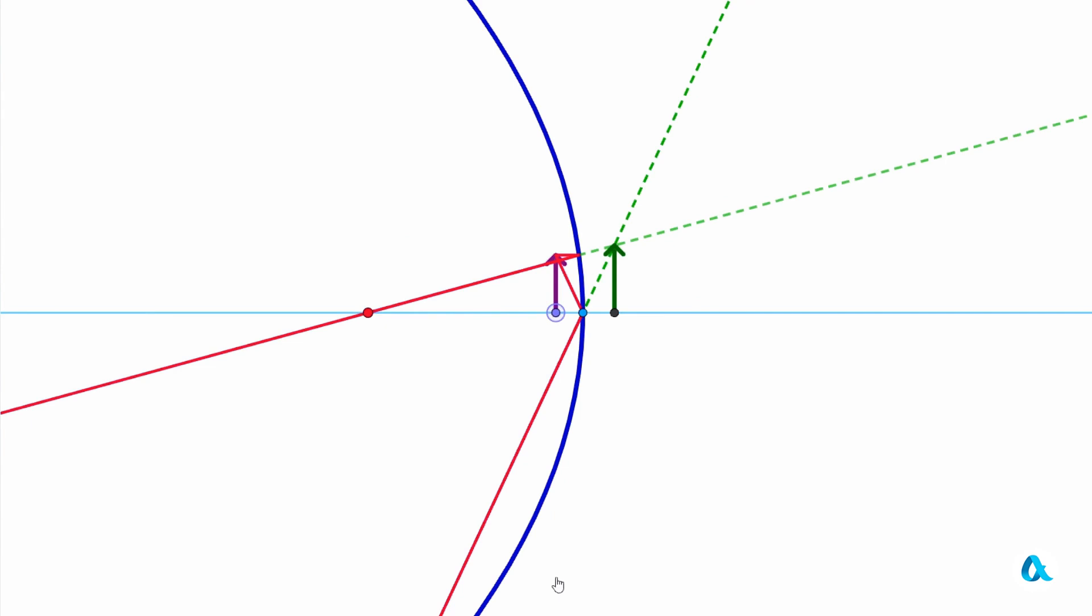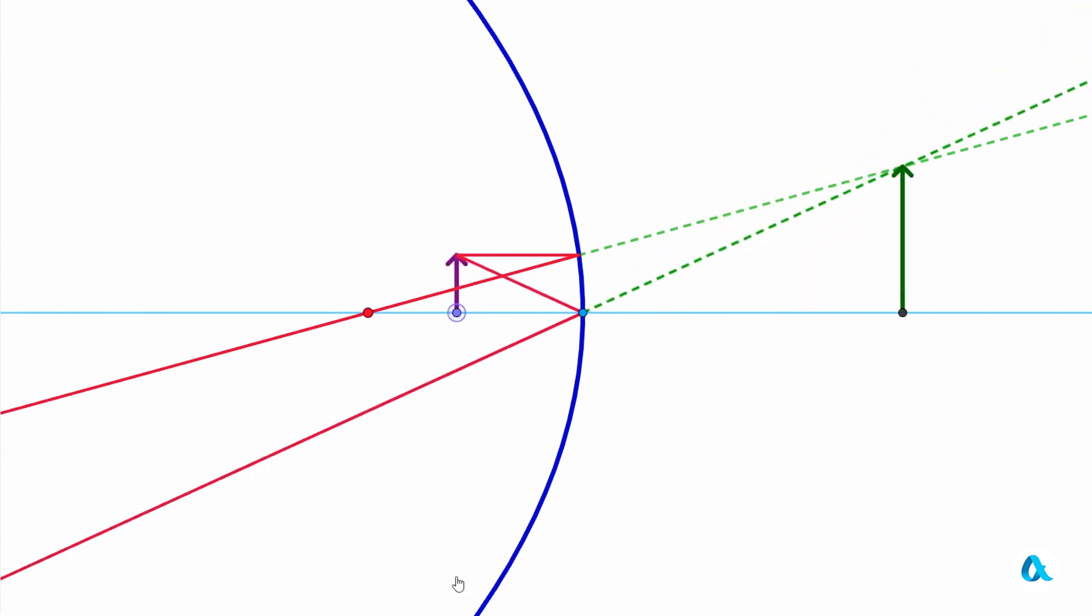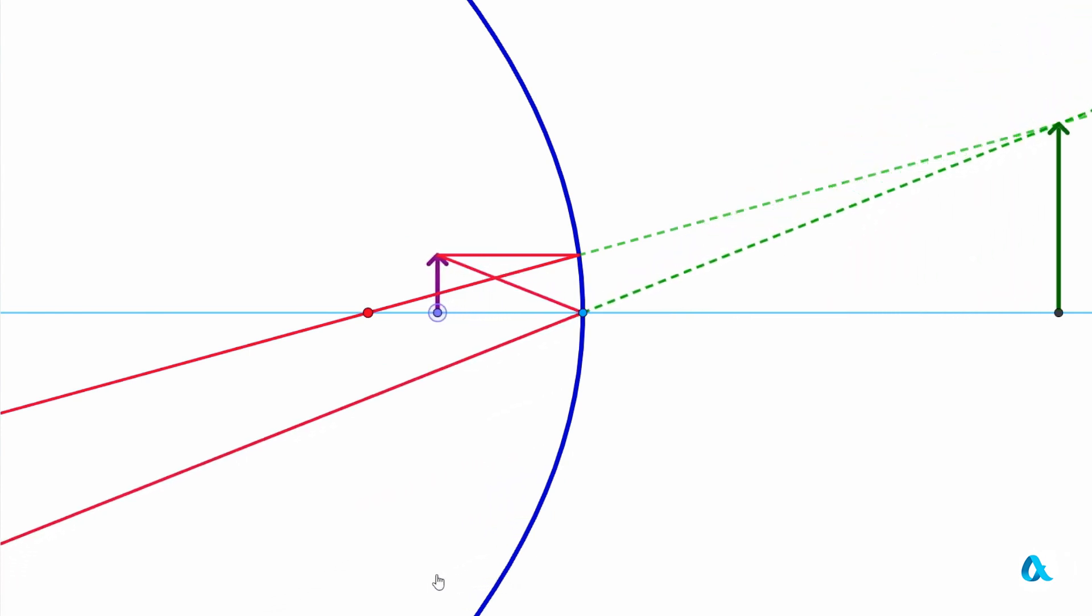Now, we will relocate the object within the GeoGebra program and monitor its image as it moves. When we move the object away from the mirror, its virtual image also moves away from the mirror and increases in size.